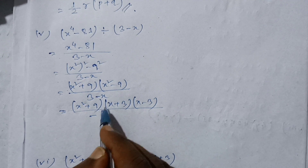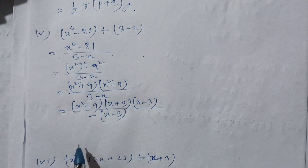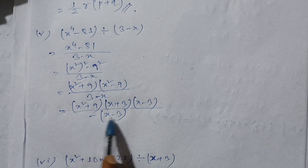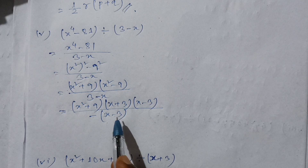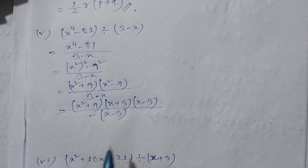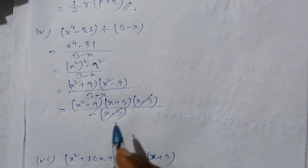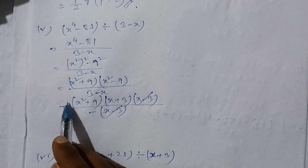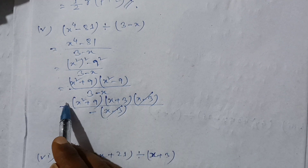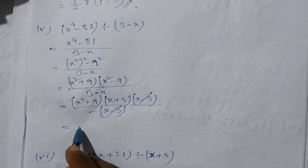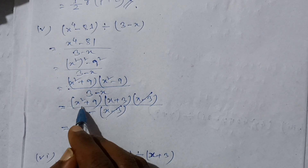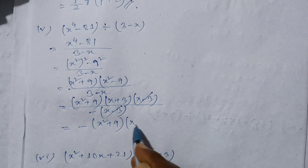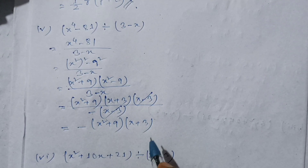We write x minus 3 in the numerator and note that 3 minus x equals negative of x minus 3. So x minus 3 divided by 3 minus x gives negative 1. The remaining factor in the numerator is x squared plus 9 times x plus 3. The simplified answer is negative x squared plus 9 times x plus 3.